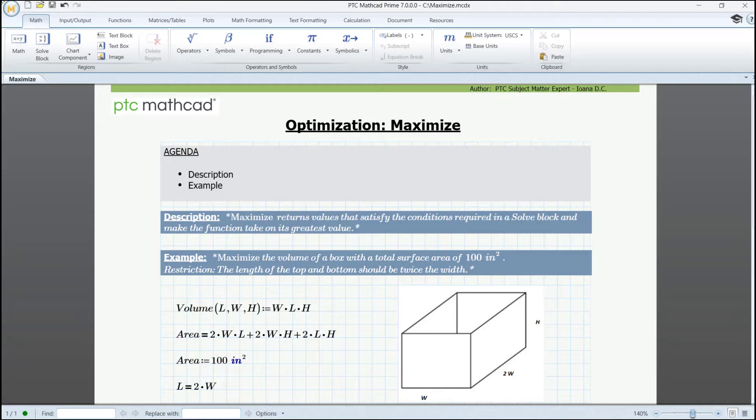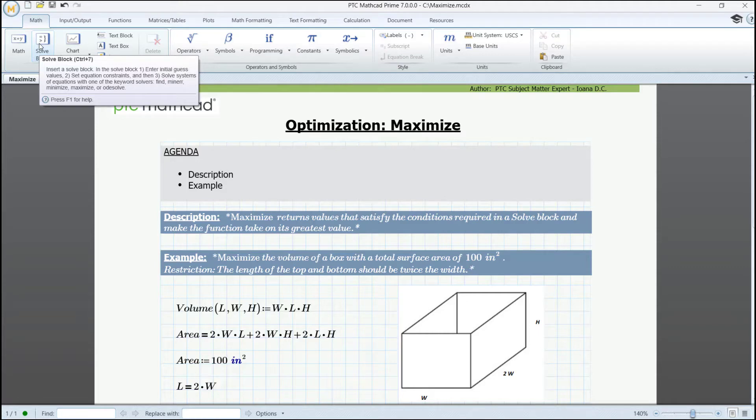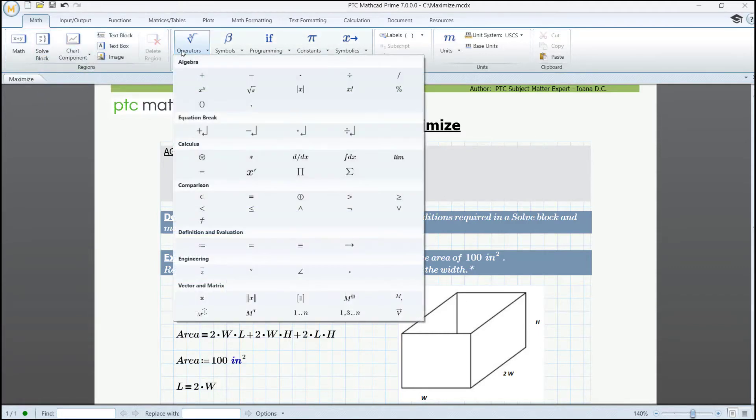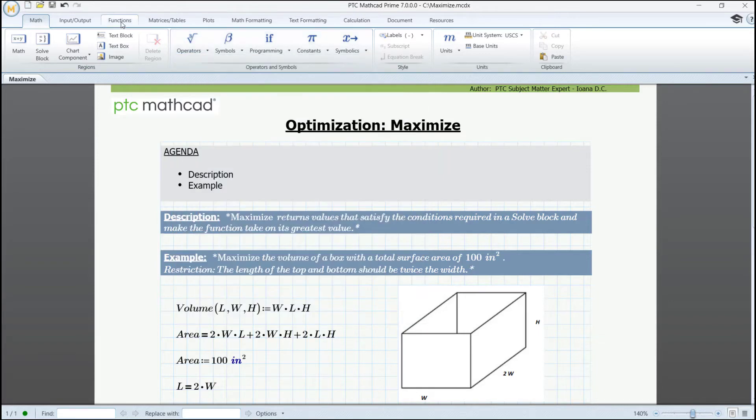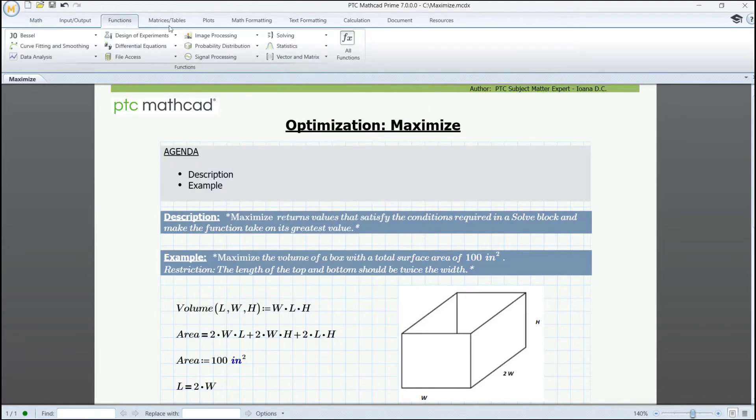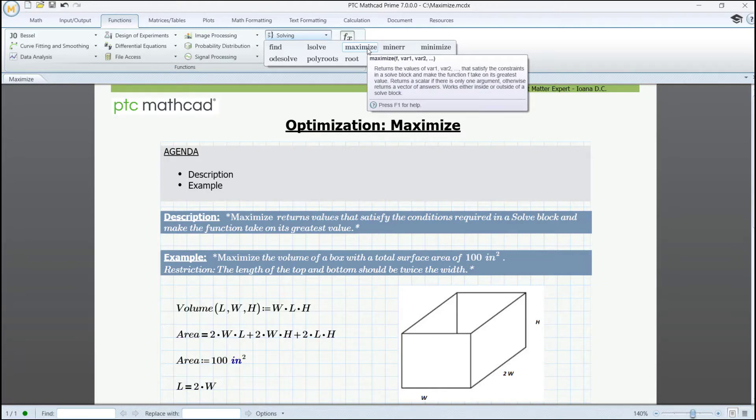We are going to solve an optimization problem and need some things. Firstly, we are going to need a solve block that can be found on the Math tab. Then, we are going to need a couple of operators such as greater than or the equal to operator. And lastly, we are going to need to use some functions, more specifically a solving function located in this solving panel on the functions tab, which will be for today, maximize.